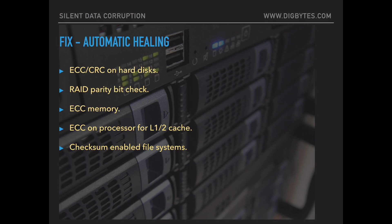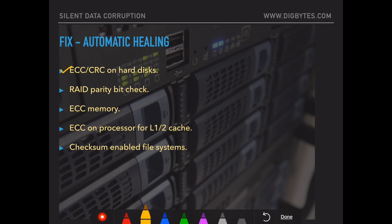So what fixes are available to resolve silent data corruption? This slide covers healing options which are automatically available on different hardware. ECC and CRC on hard disks: this is now default on all new hard disks. An error correction code runs in real time taking care of any corruption, and cyclic redundancy check features are available on the hardware to automatically handle detected corruptions without any intervention from the administrator or any other program.